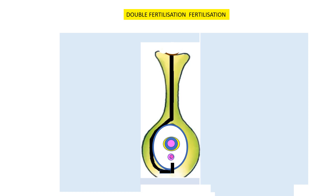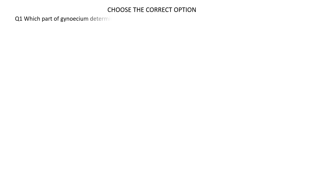The two nuclei from male sex cells are fused with two female nuclei. So it is called double fertilization. Now let us start answering the questions which are often asked in the board exam.